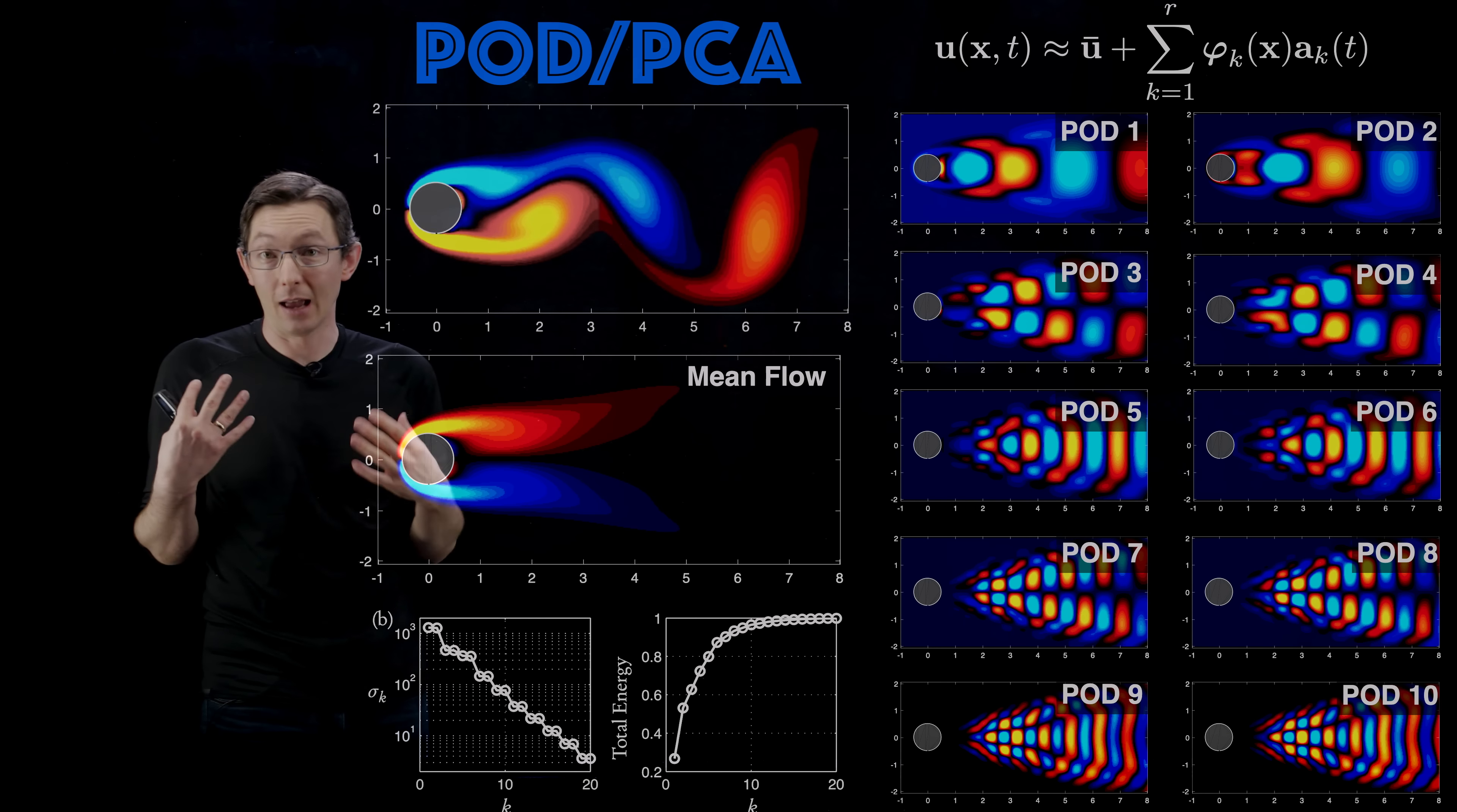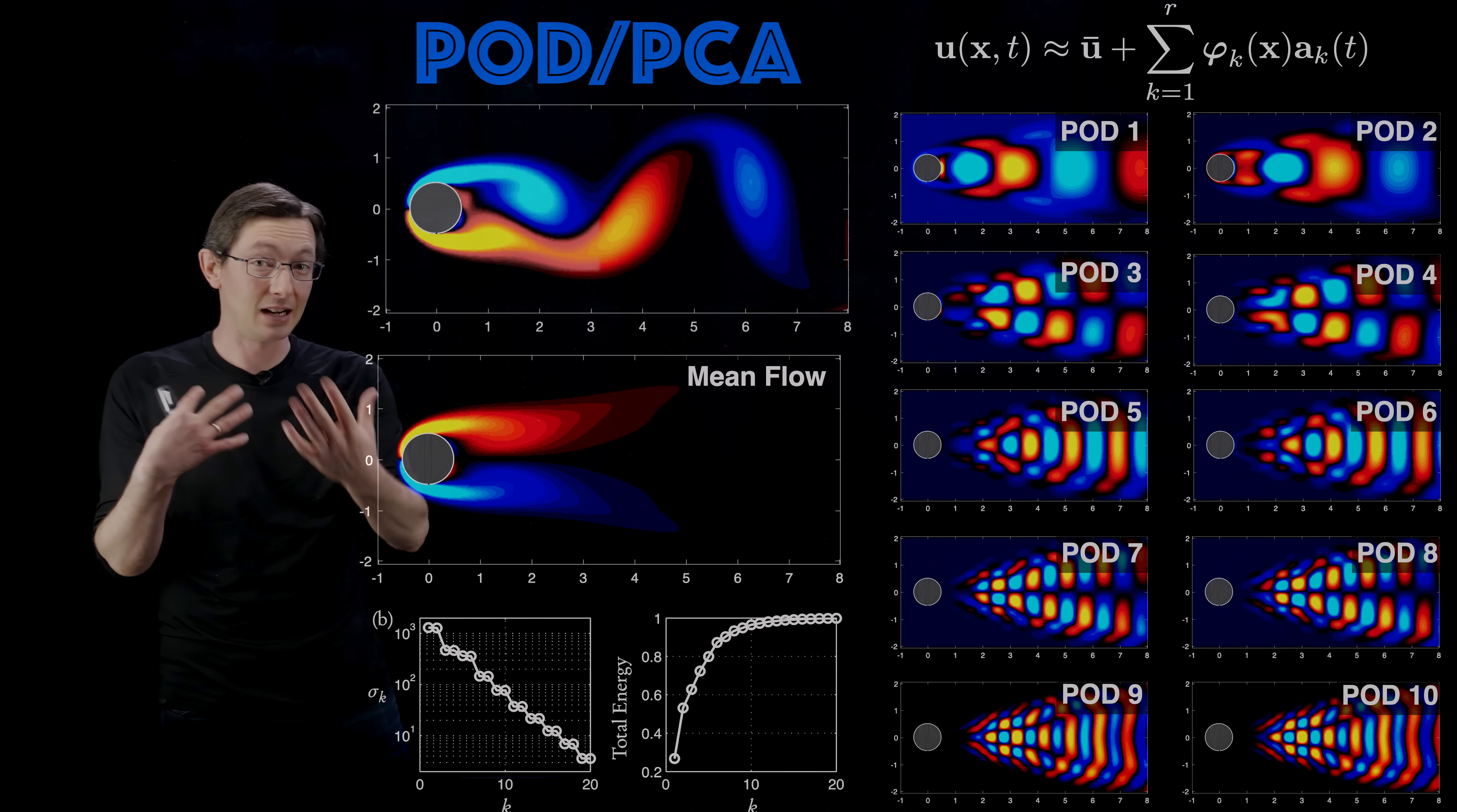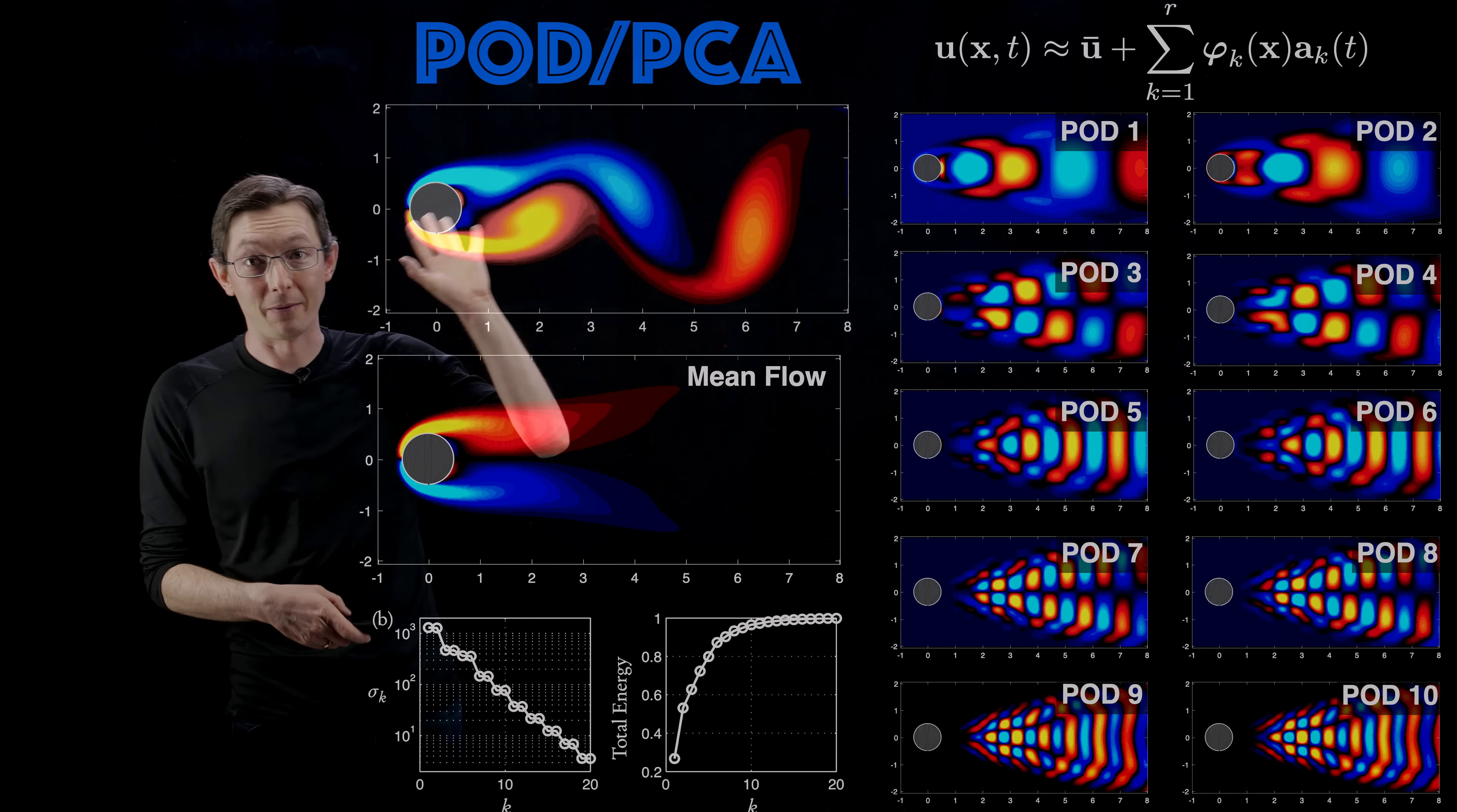This basic POD in fluids has been around for 50 years and it's a cornerstone of how we analyze and work with high-dimensional fluids. I'll point out this looks a lot like a Fourier decomposition, a separation of variables, a space-time separation of variables which is how we solve lots of partial differential equations. This is a data-driven generalization of the Fourier transform that satisfies these particular boundary conditions and is generated from physical data from an actual flow simulation.